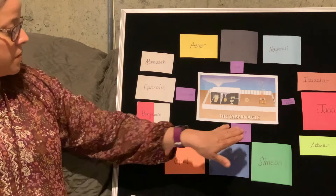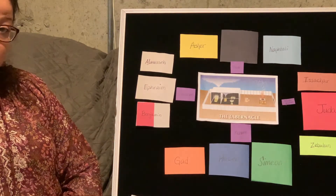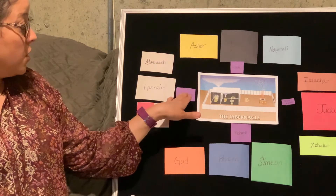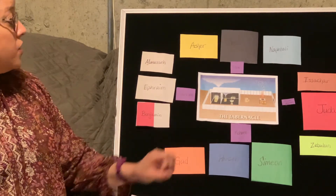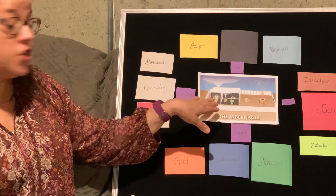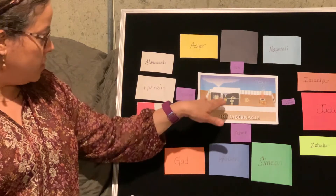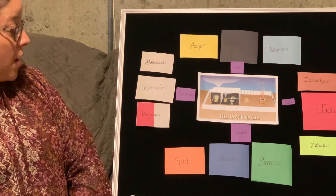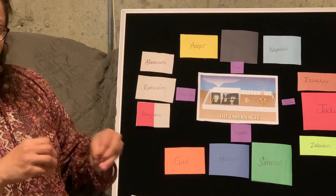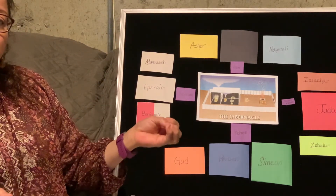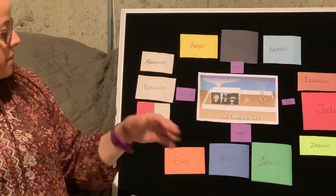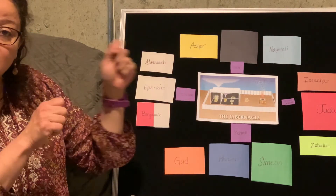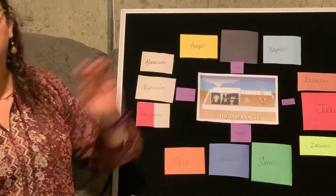Here's what they were supposed to do. Kohath's clan's job was to take all the coverings and curtains from the tabernacle. Gershon's job was to get all of the furniture within the tabernacle — the menorah, the incense, the Holy of Holies, the showbread. Marari's job was to take all of the outside structure — the main frame — including all the planks, the sockets where the curtains would hang, and all the poles.